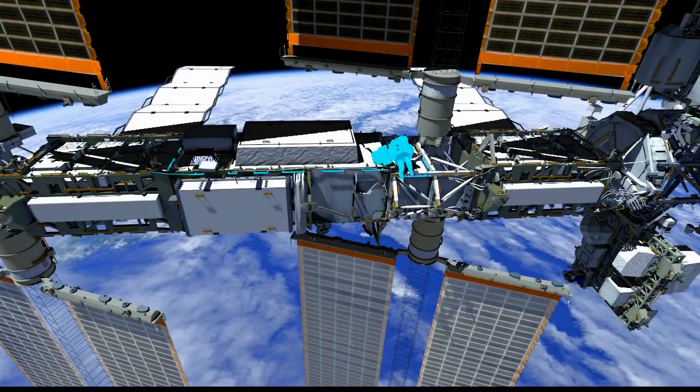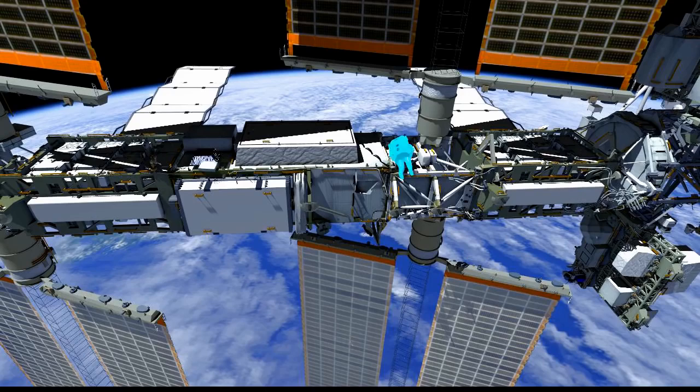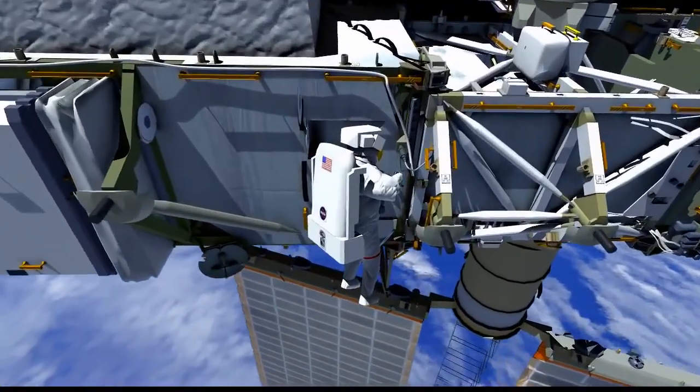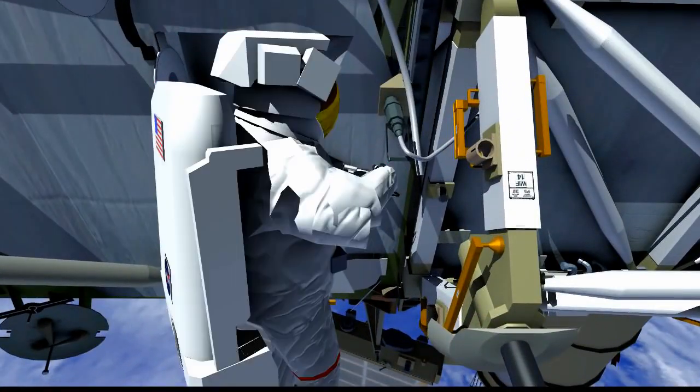He'll then pick up the bags that Scott left behind there. He'll move them to a new location that's more convenient for this portion of the EVA. And then he'll head down to the P5-P6 jumper. He'll break that connection in the fill line and route that to the vent tool and vent tool extender. And this will begin the venting of the fill line.